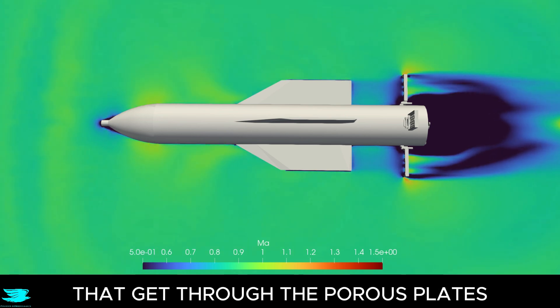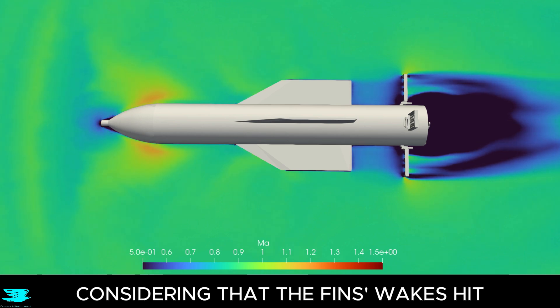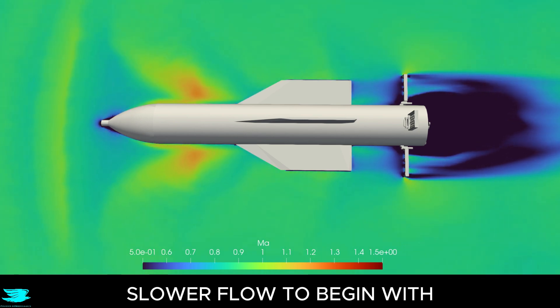There are minor pockets of supersonic flow that get through the porous plates. That is even more impressive, considering that the fins' wakes hit the plates, so the plates have slower flow to begin with. Yet the flow still manages to go well above Mach 1.